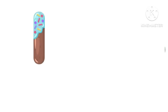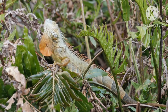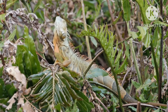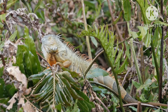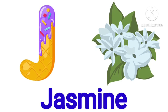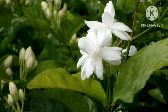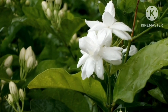I is for iguana. Let's say it once again — I is for iguana. J is for jasmine. Yes, say with me again, come on — J is for jasmine.